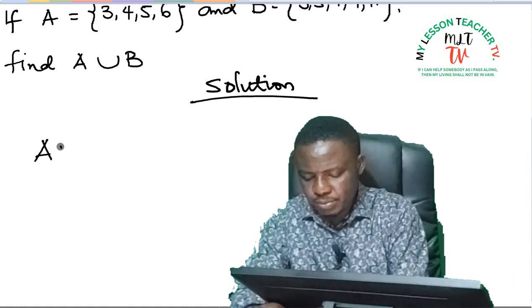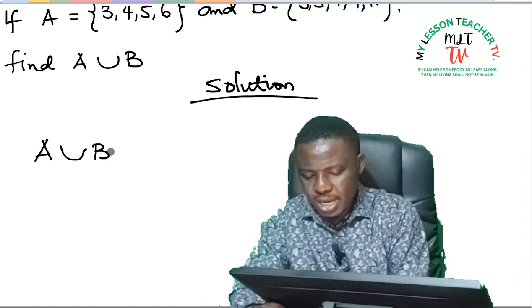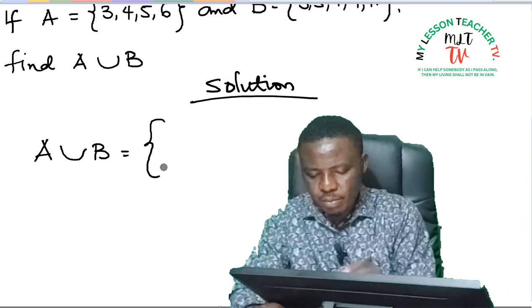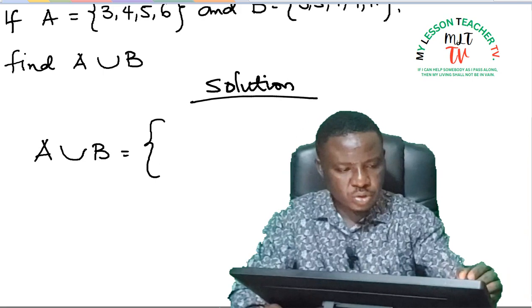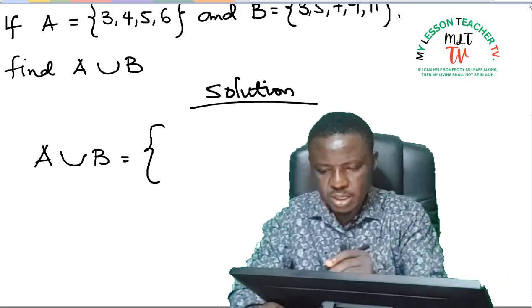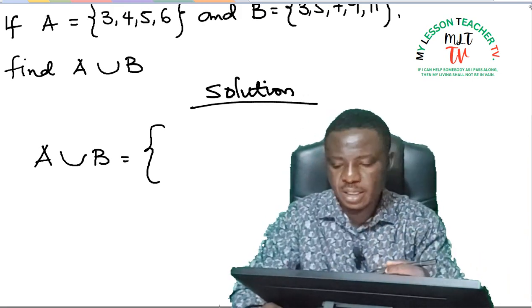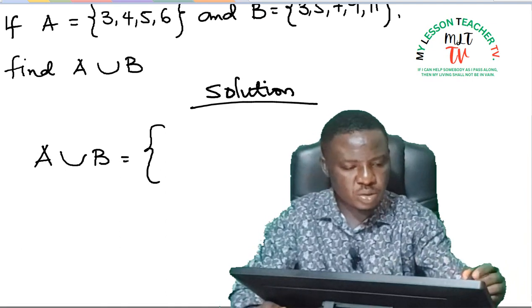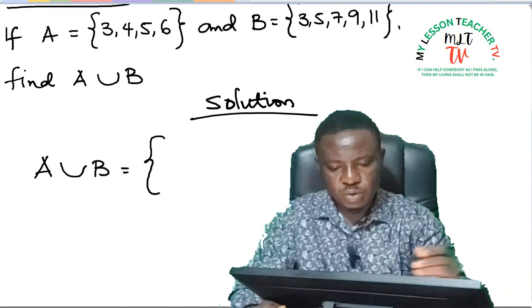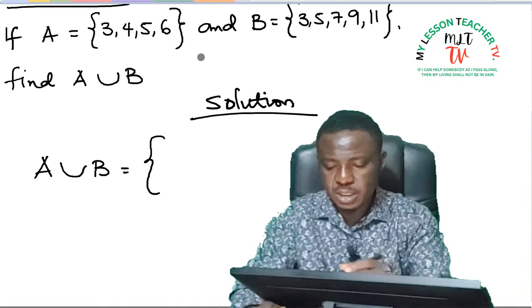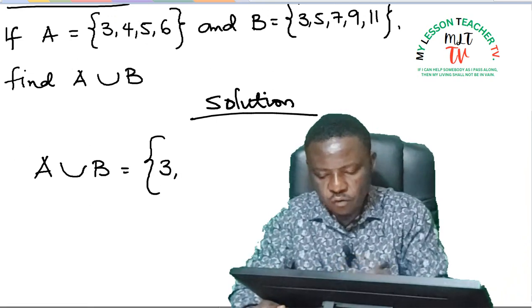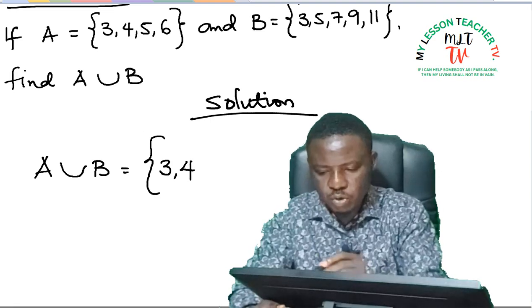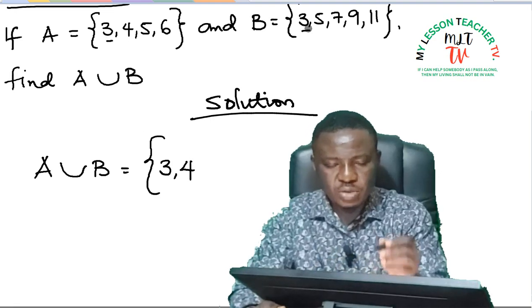Solution: A union B simply means add all the elements in A plus all the elements in B without repetition. So if we have to do this, I'm going to write them in ascending order without repetition. So looking at both A and B, we have 3 being there, comma, we have 4.